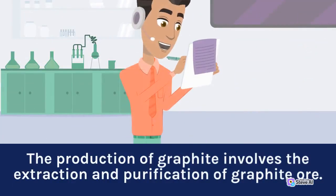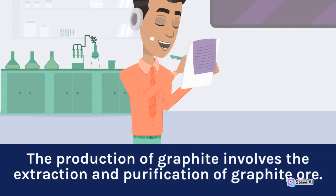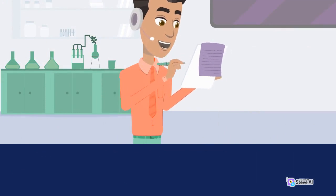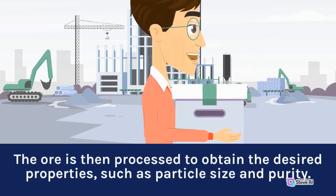The production of graphite involves the extraction and purification of graphite ore. The ore is then processed to obtain the desired properties, such as particle size and purity.